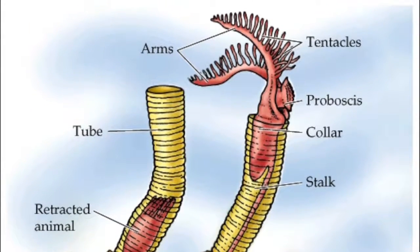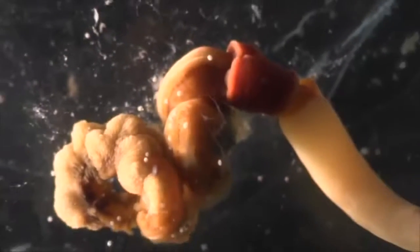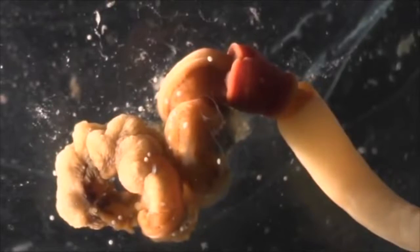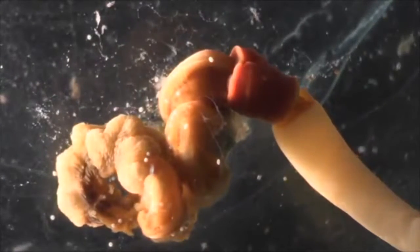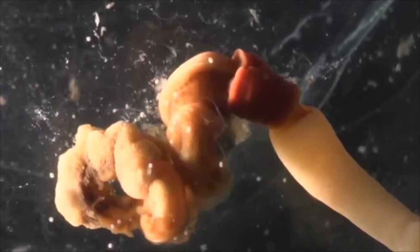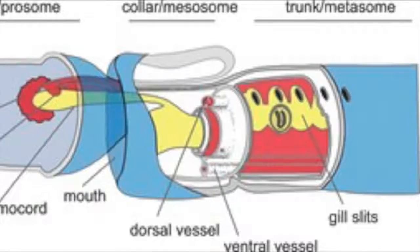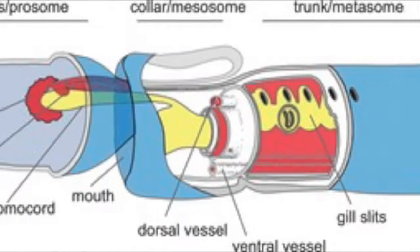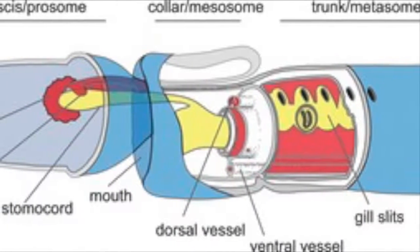Enteroneusta are solitary organisms that undergo sexual reproduction involving two sexes and egg fertilization. Adult acorn worms share similar characteristics to chordates. They contain pharyngeal gill pores, a partially neurulated nerve cord, and a stomochord.